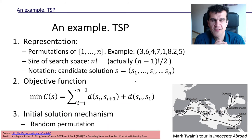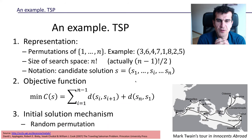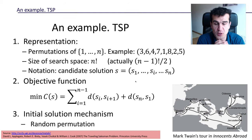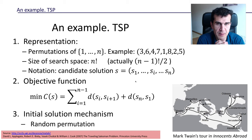Hi guys. In this video we're going to see an example of how to apply local search to a combinatorial optimization problem, and in particular we're going to apply it to the traveling salesman problem.